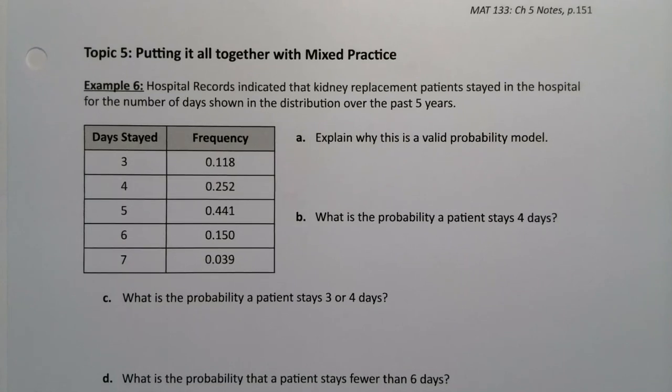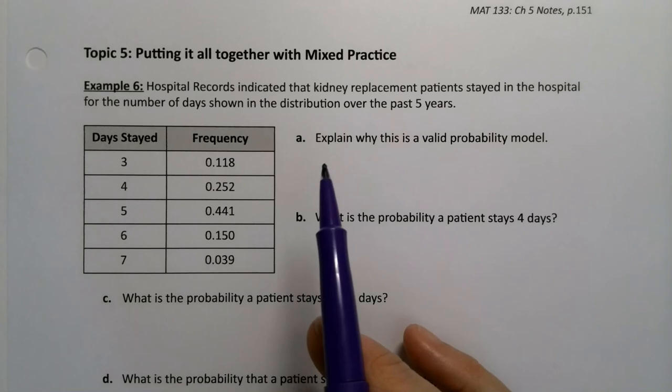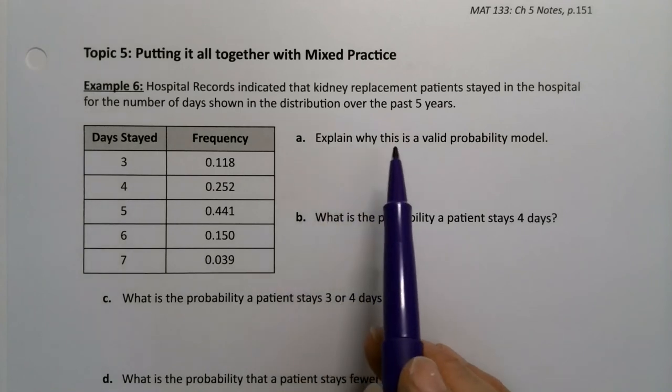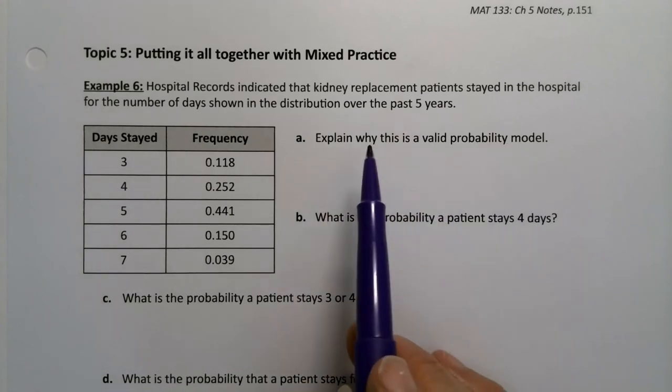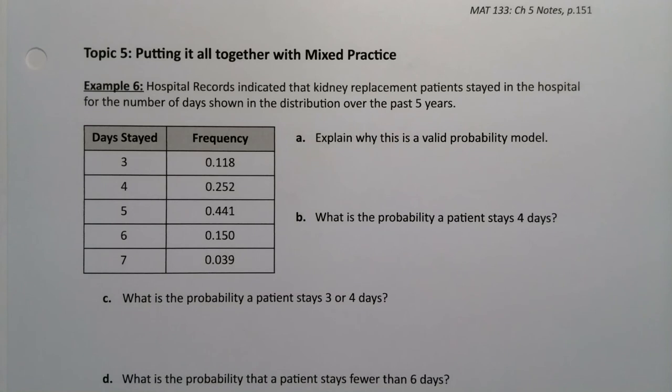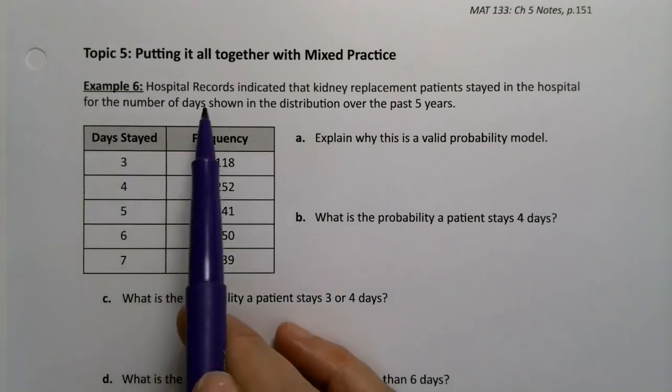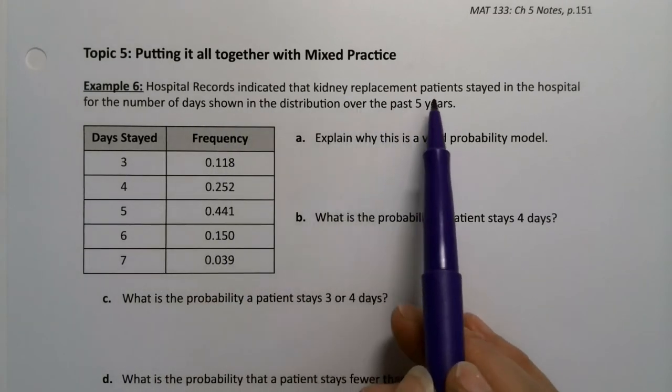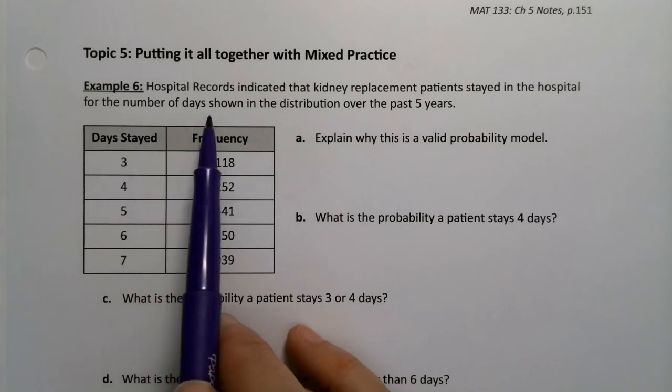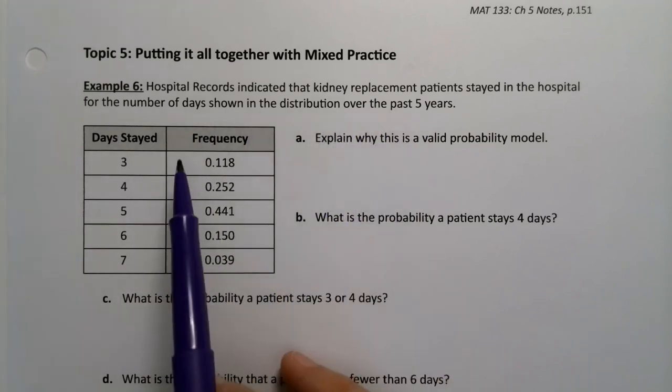We've learned a whole bunch of different definitions as well as a few different probability rules, so it's time to put it all together with mixed practice. Hospital records indicated that kidney replacement patients stayed in the hospital for the number of days shown in the distribution over the past five years.